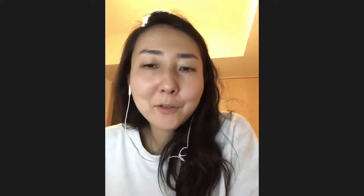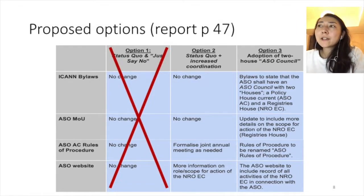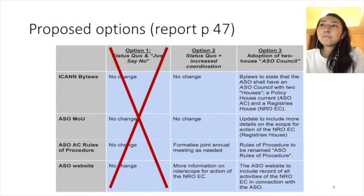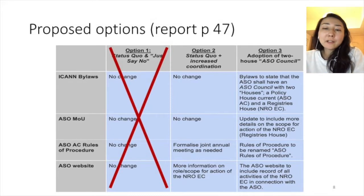So we would like to move forward and make sure that improvements are made, and we don't just do nothing about these identified issues. You can see from the diagram that the EC felt we don't want to keep option one, but we're open for option two or option three, or any other options that the community thinks makes sense.